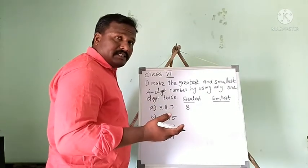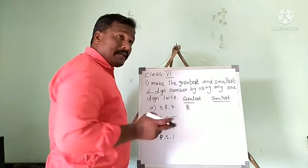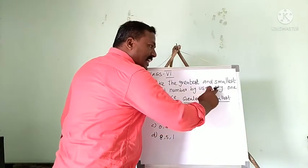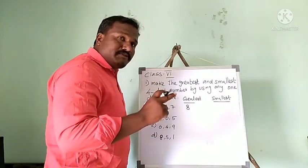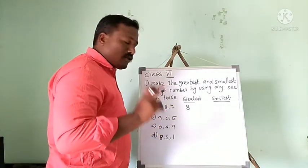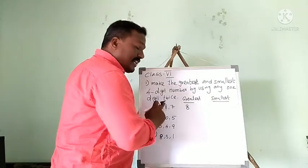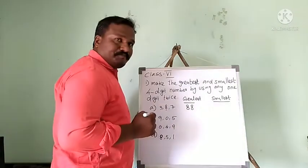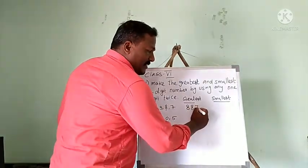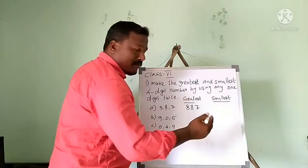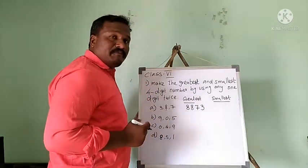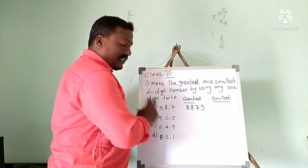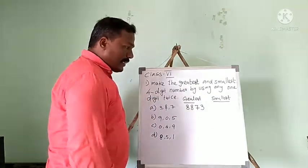The question says to make a four-digit number using any one digit twice. So I use the greatest digit, 8, one more time. Then the next smaller number, 7, and then 3. So the greatest four-digit number from 3, 8, 7 is 8873.